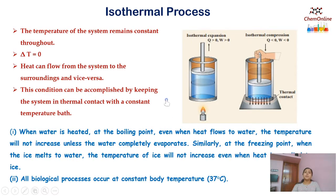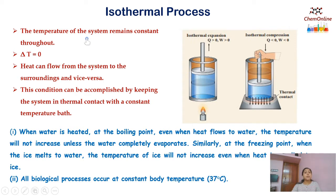First we will see about isothermal process. As the name implies, isothermal means the temperature will remain constant. A process in which the temperature of the system remains constant throughout is called an isothermal process. Delta T will be equal to 0, where Delta T means change in temperature.